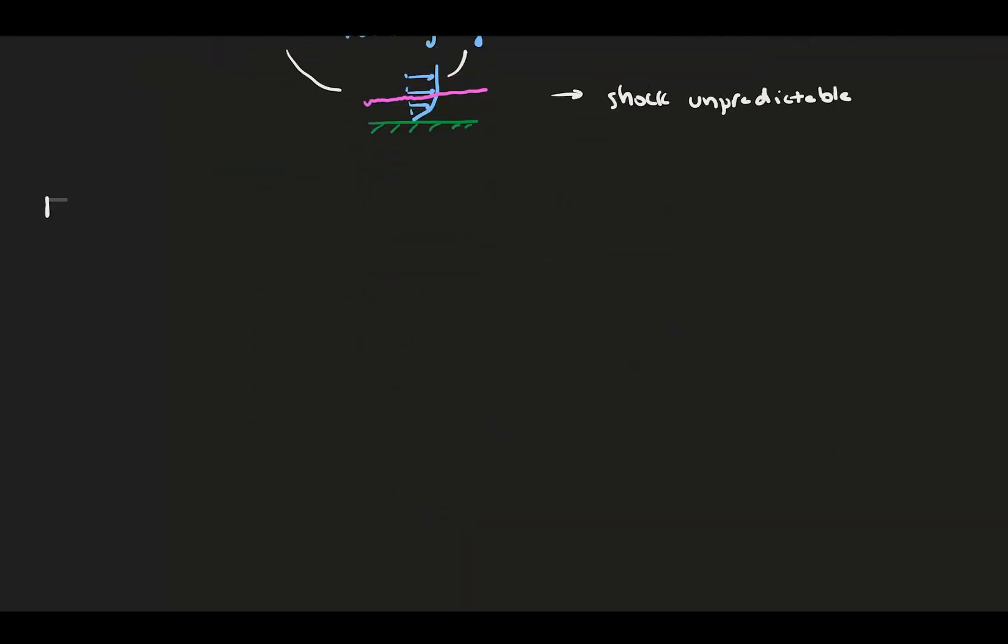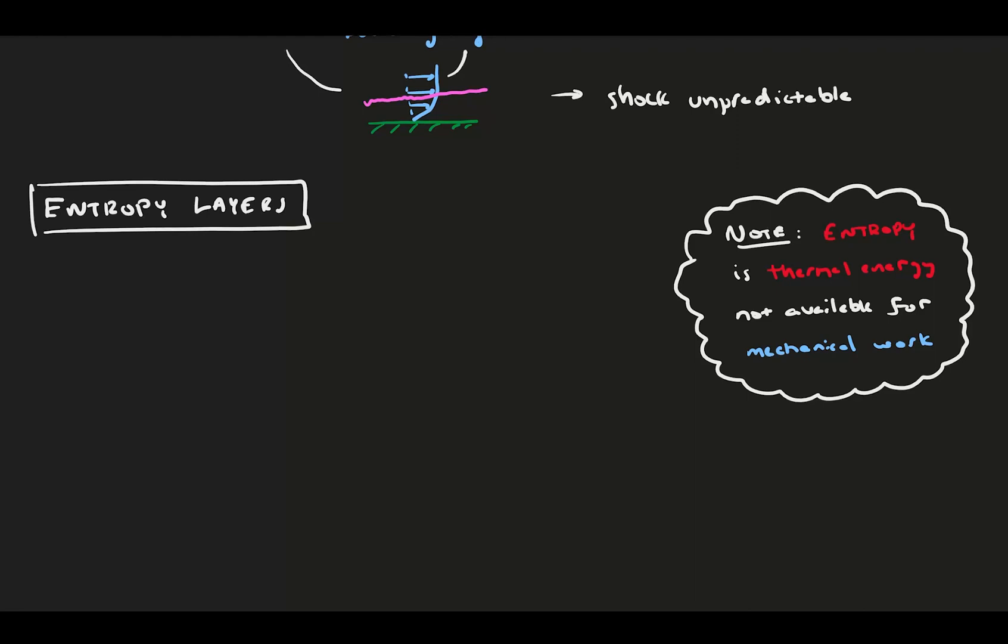And if that wasn't enough, we get a third layer to worry about. Entropy layers also grow in a boundary layer. A quick reminder, entropy is the thermal energy unavailable for mechanical work and is often associated with disordered motion and gas. Past the shock, we see changes in entropy.